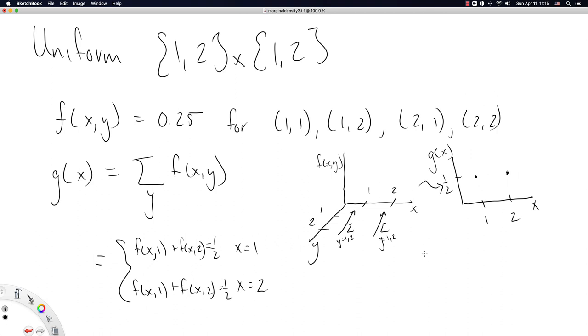So it's like we get a new uniform distribution across x for the values one and two, and the points just have the density equal to one half. Okay, let's try a continuous example.